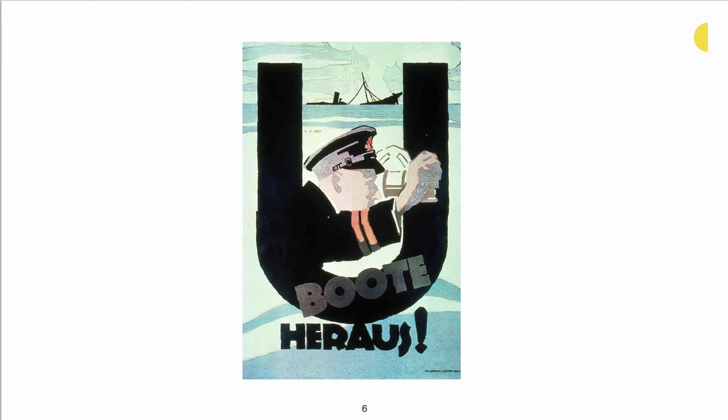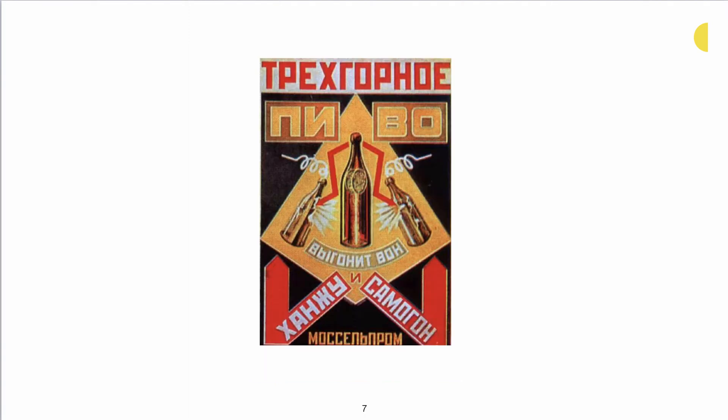Even though it says Bauhaus, don't let that fool you — this is De Stijl. Next we have another great example of Plakatstil. In this particular example, that Cyrillic alphabet where the lettering looks Soviet influenced is really giving us a clue that we're looking at Constructivism, because we see recognizable objects.